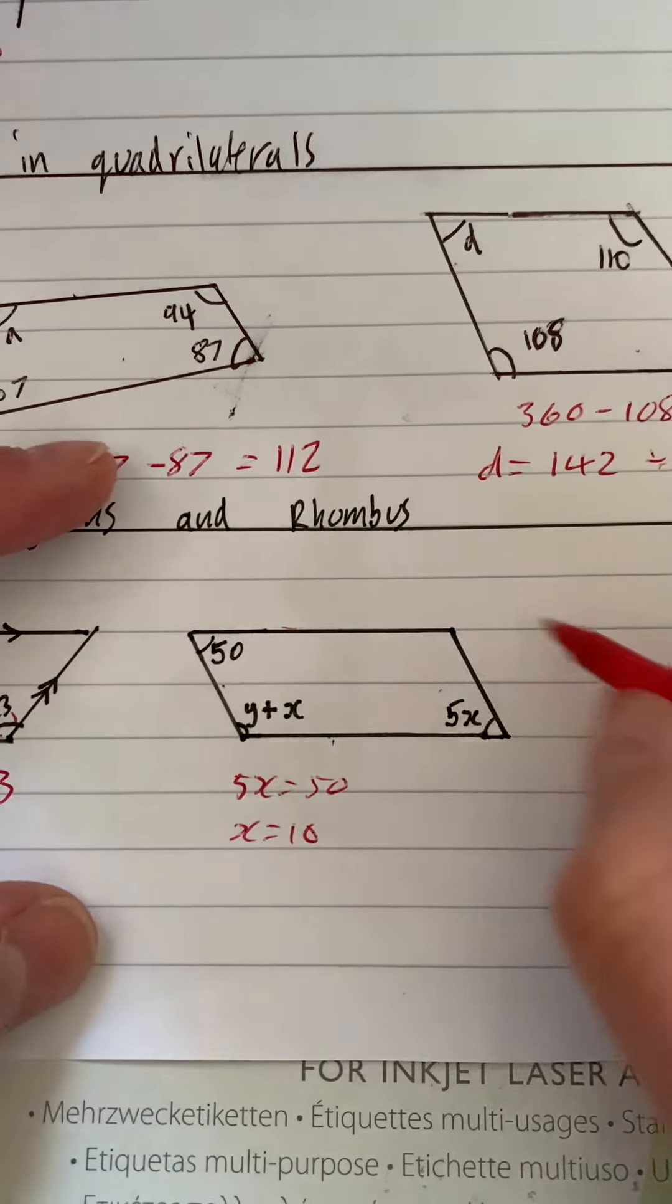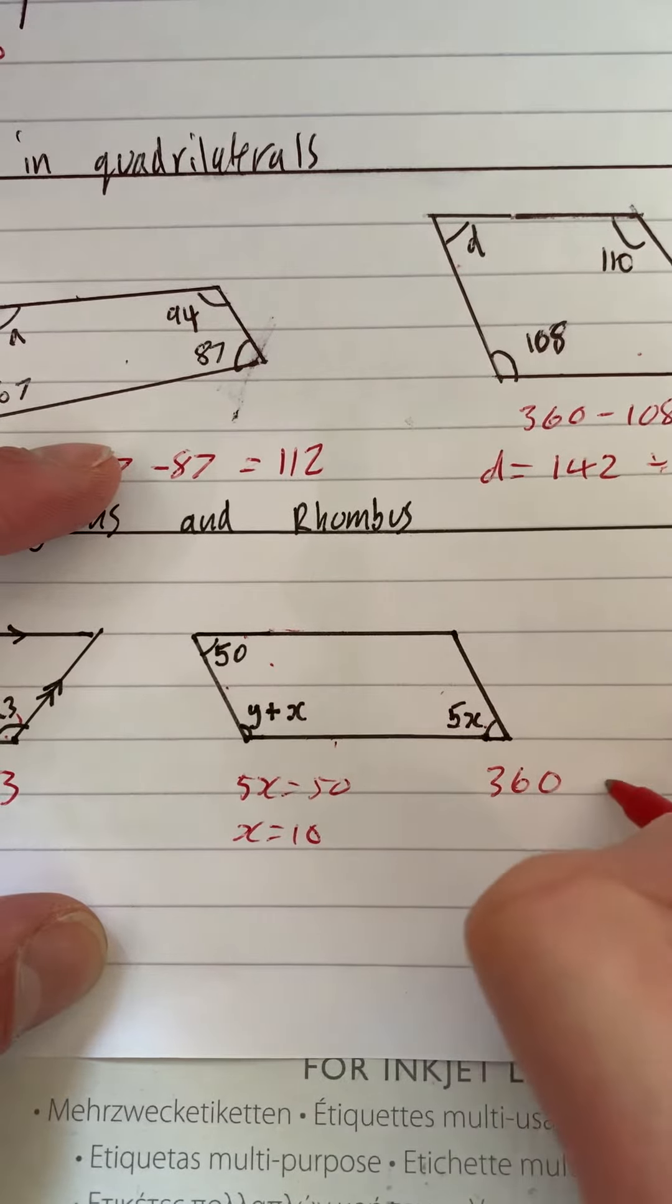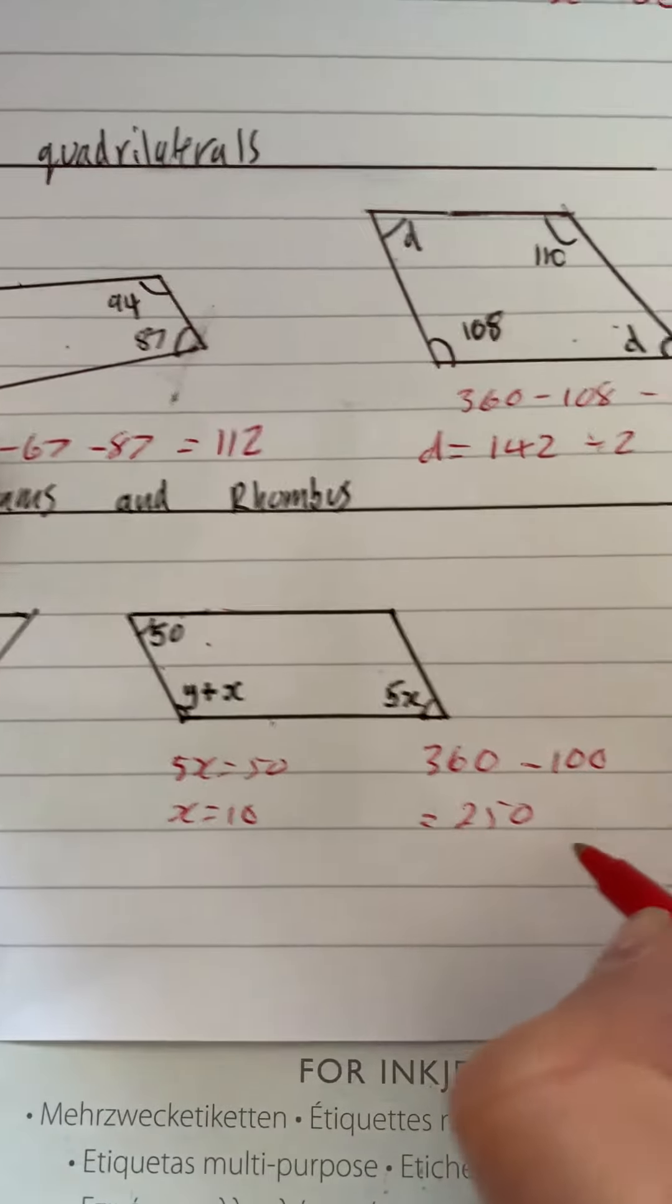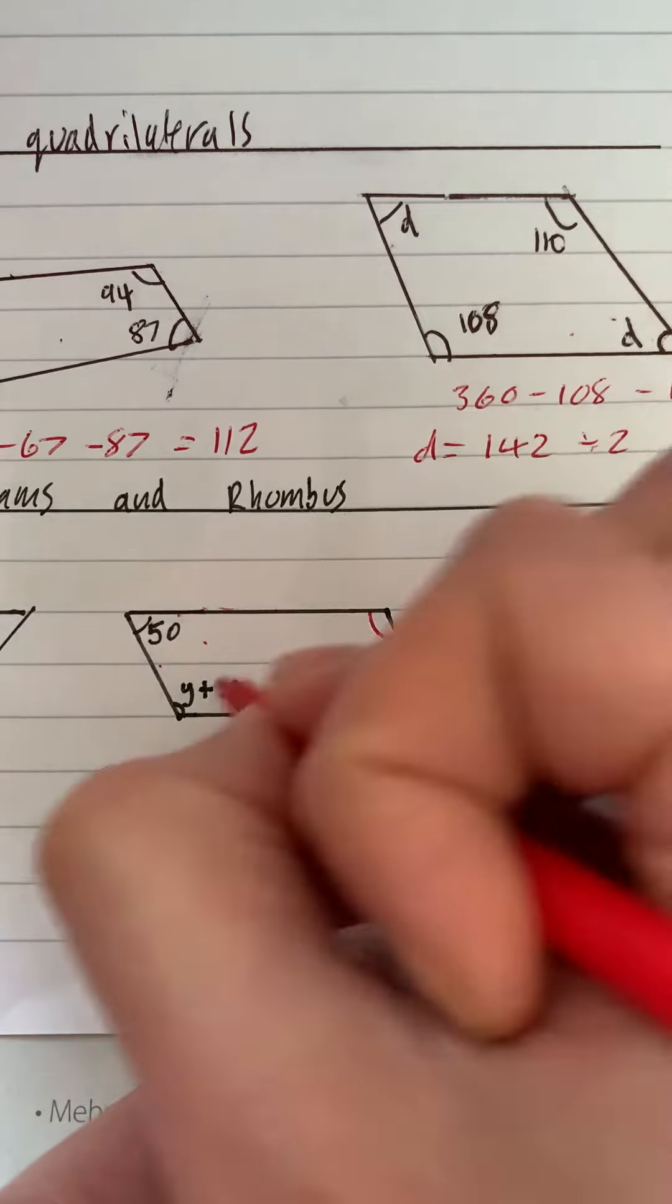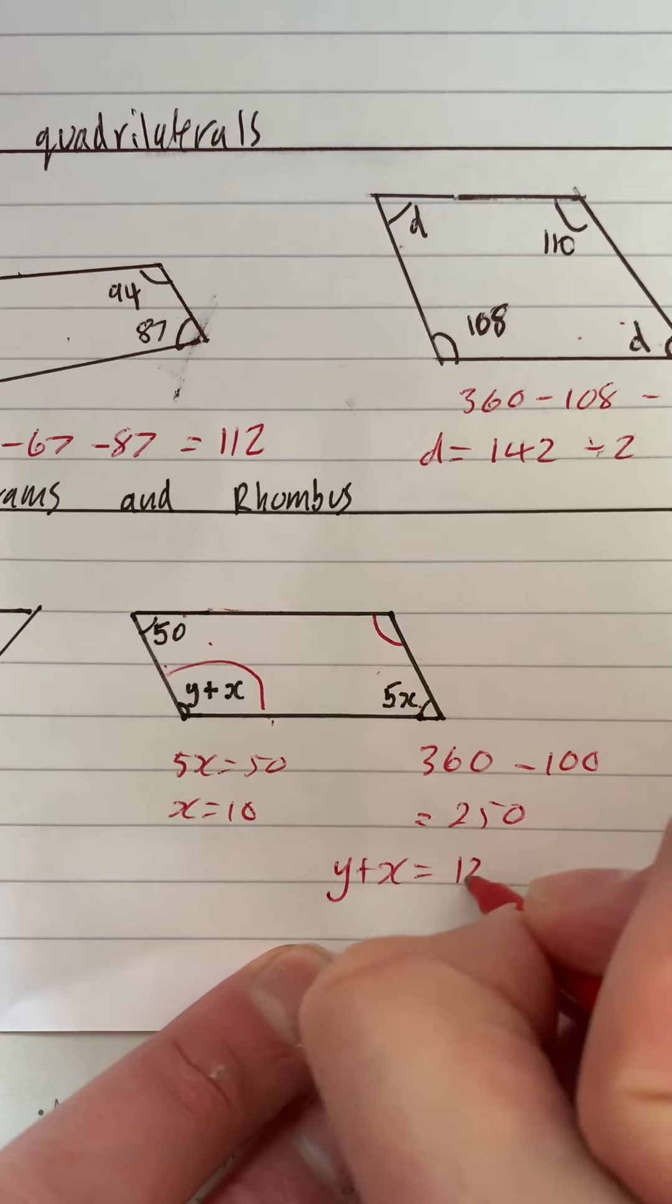So what we then know is if these two are 100 between them, and it's 360 altogether, 360 take 100 equals 250. If we divide that by 2, we know that that one would be 125, and that one would be 125, so we know that y add x is 125.